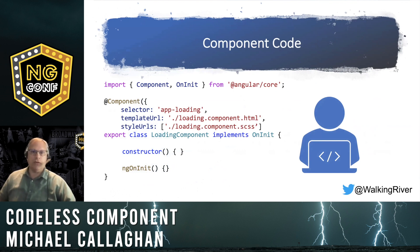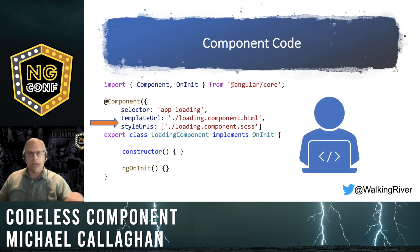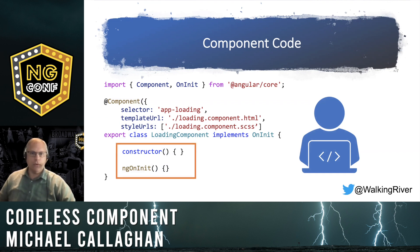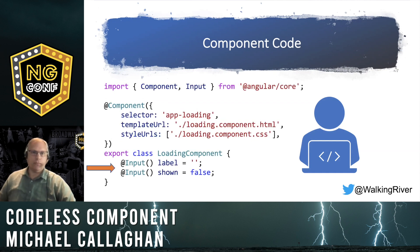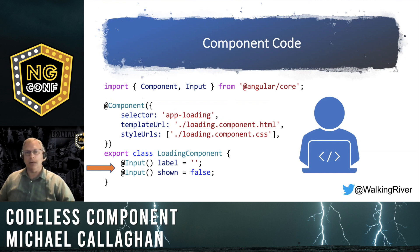The component decorator tells us how the component is going to be defined. Selector defines the app's HTML tag name. The next two lines tell the Angular compiler and us where to find the markup and styles for the component respectively. Next is the empty class body itself with just those two empty lifecycle functions, which I don't need, so I deleted them entirely and replaced them with just two variables. The input decorators tell Angular to expose those two variables as attributes on the custom HTML tag. Label will be bound to some text in the HTML so I can tell the user exactly what's being loaded. Shown allows the host to show or hide the component as needed.